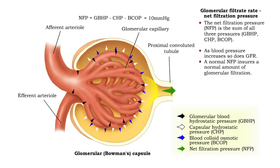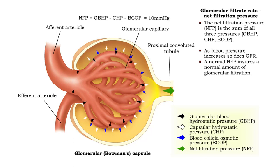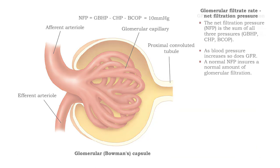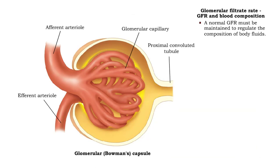A normal net filtration pressure ensures a normal amount of glomerular filtration. When net filtration pressure is normal, the amount of glomerular filtration will be normal as well. A normal glomerular filtration rate must be maintained to regulate the composition of body fluids.